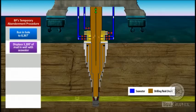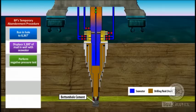3. Perform a negative pressure test to assess the integrity of the well and the bottom hole cement job. 4. Displace the mud in the riser with seawater.